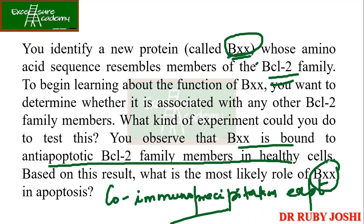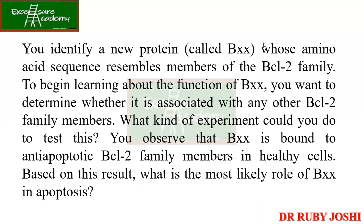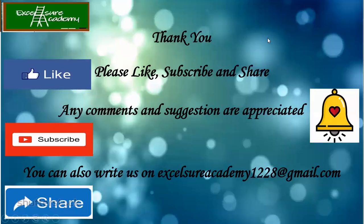This is how you actually identify a new protein and its role or function in a particular cell. This is one very good example to know the function and the advantages of using co-immunoprecipitation. If you don't know about co-immunoprecipitation, go back and make sure you are making notes on this and try to understand and relate to the given questions.